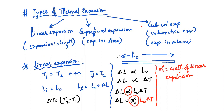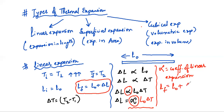The final length will be L₀ plus delta L, which equals L₀ plus alpha × L₀ × delta T. Taking L₀ common, the final length becomes L₀ into (1 + alpha × delta T). Please note this down.